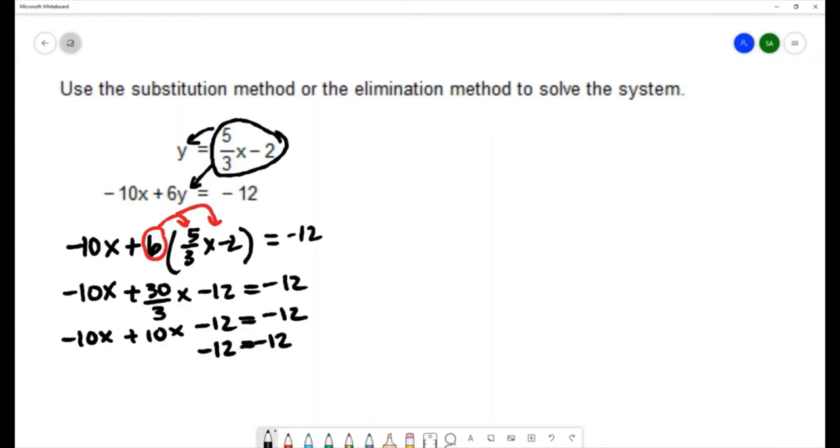And what we have here is a special case of our systems of equations in that we were intending to get down to one variable within our equation but as we did that all of the variables ended up going away leaving us with this final statement here of negative 12 equals negative 12.